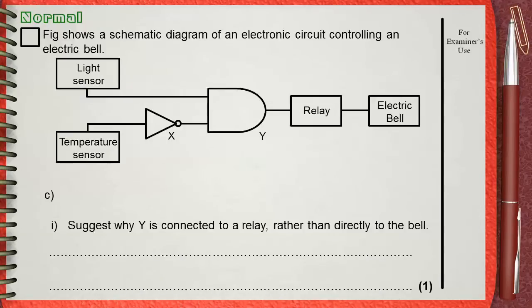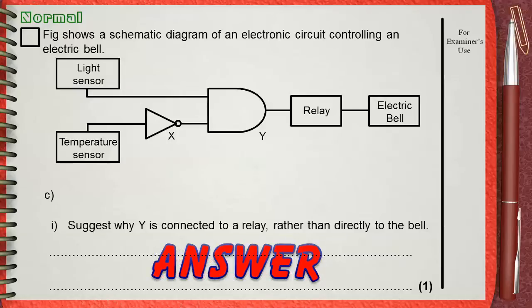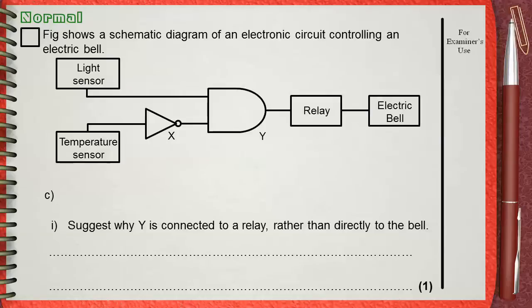C. Suggest why component Y is connected to a relay rather than directly to the electric bell. Actually, a logic gate - whatever it is: AND, OR, NAND, NOR, and even NOT -